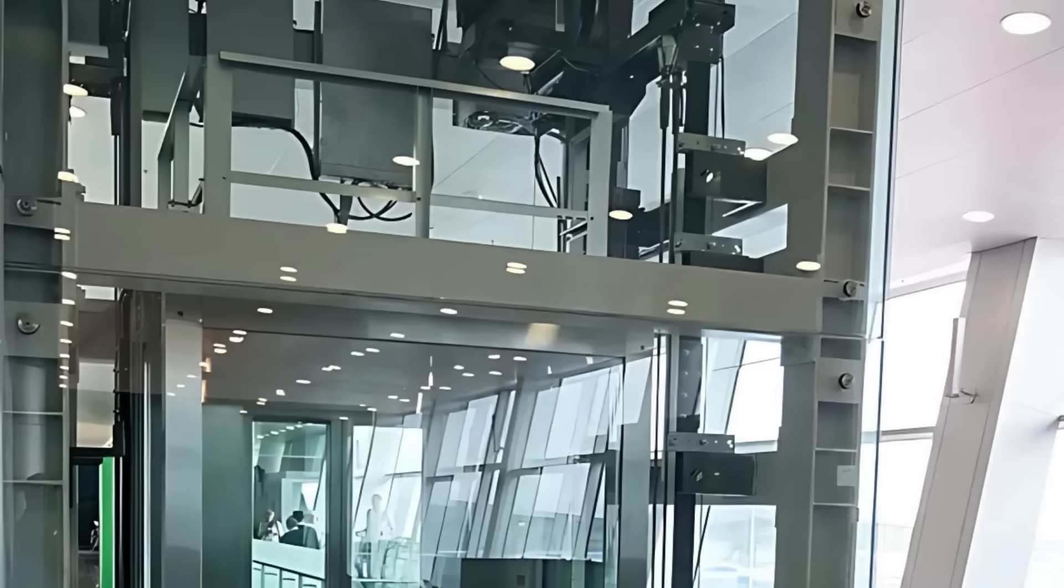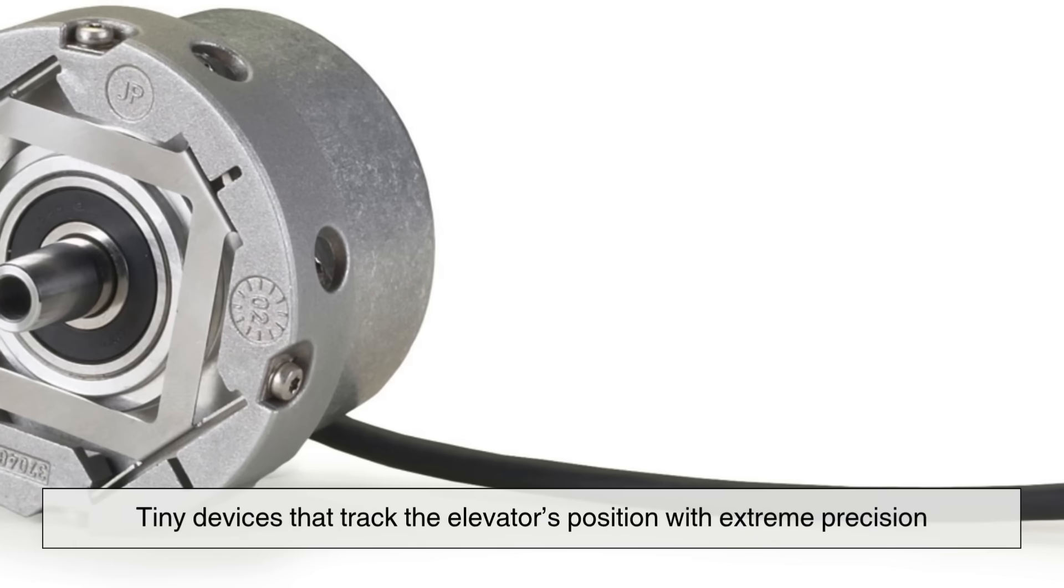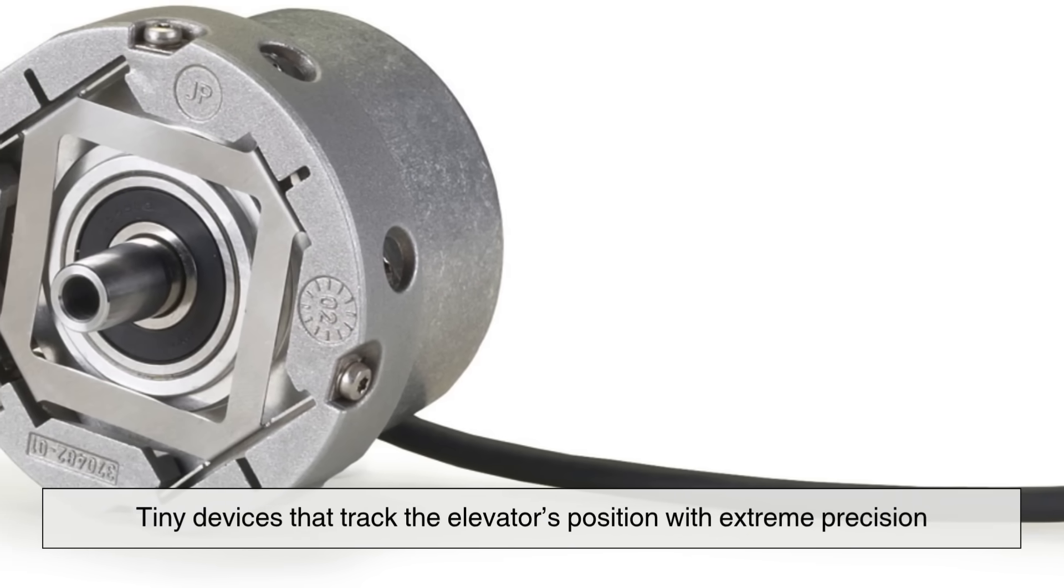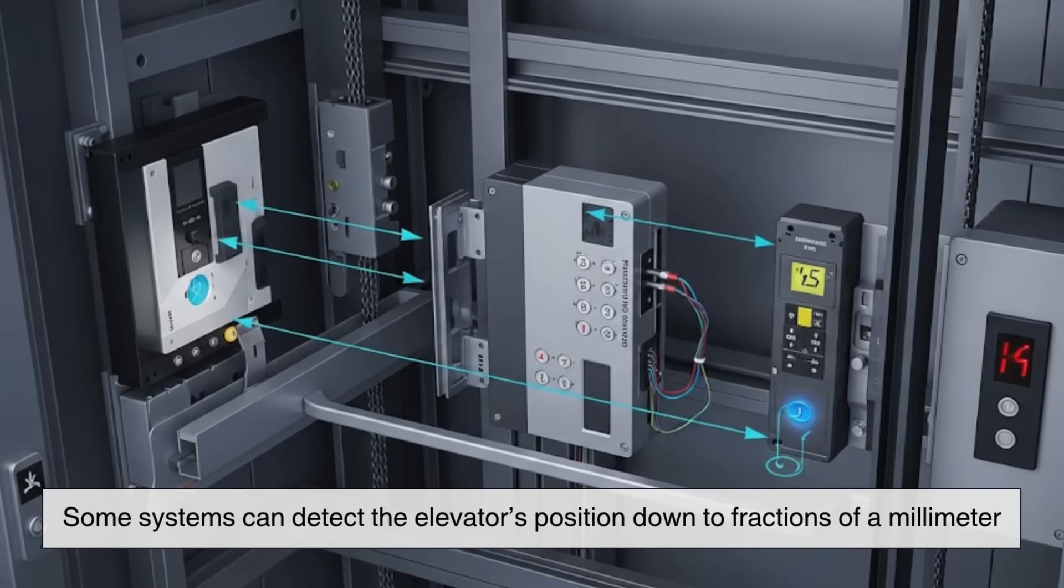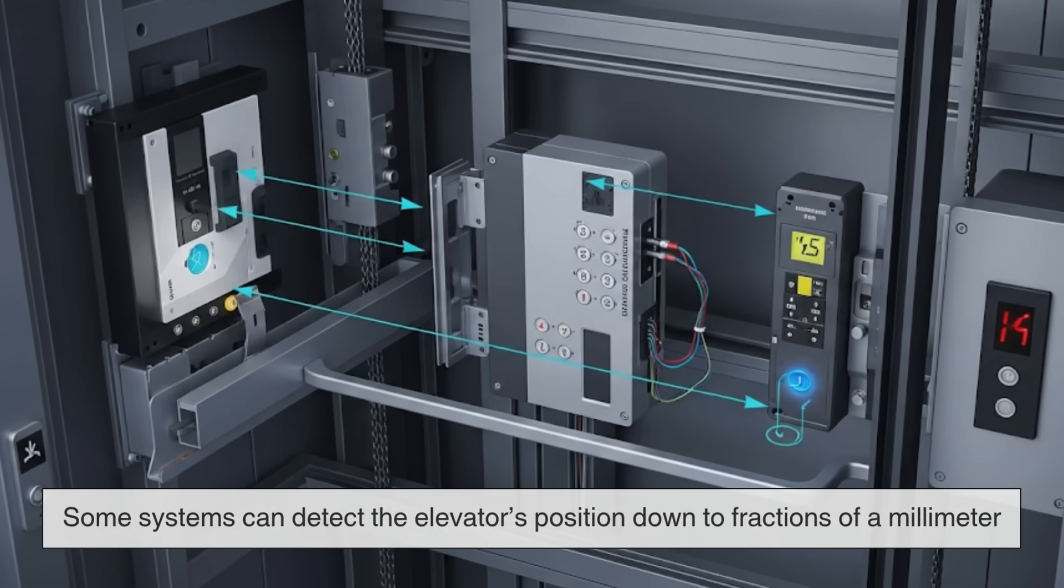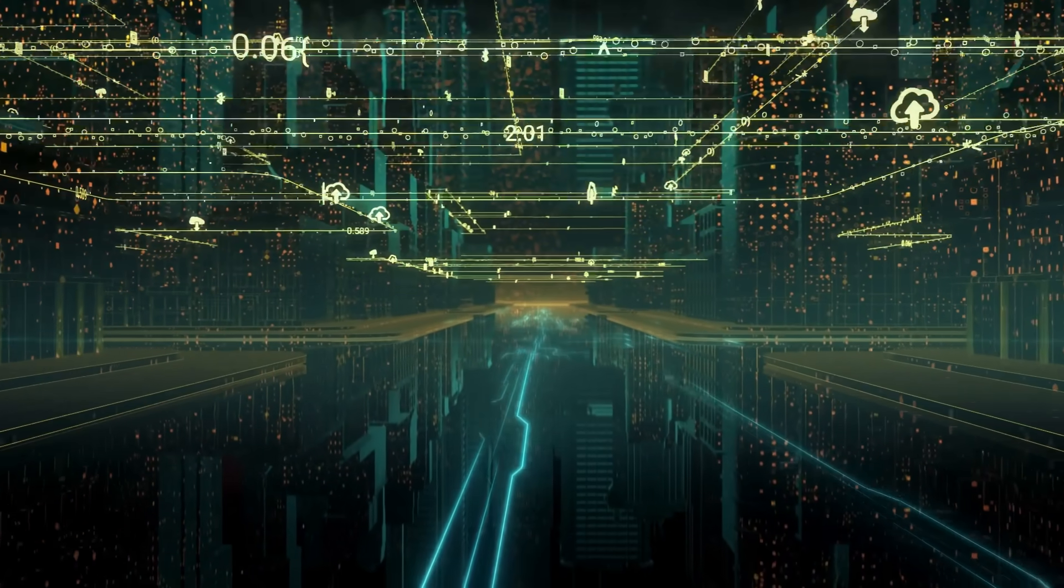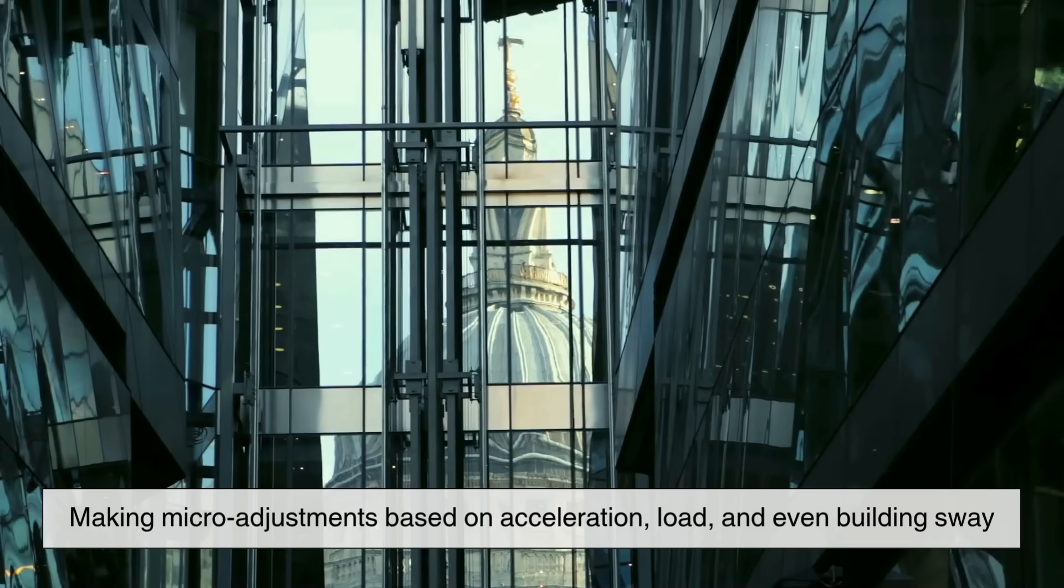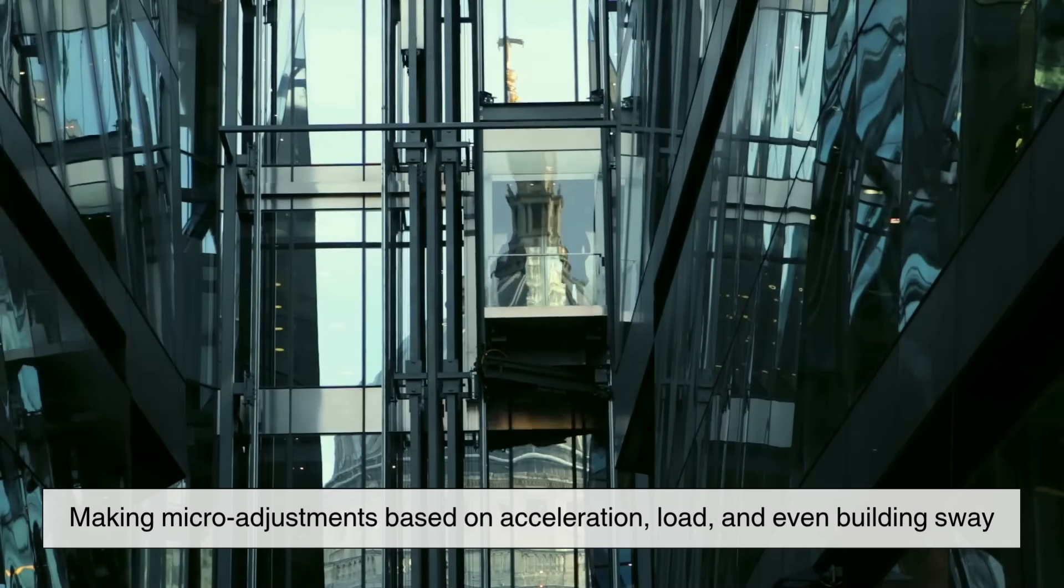To deal with that, skyscraper elevators use advanced encoders, tiny devices that track the elevator's position with extreme precision. Some systems can detect the elevator's position down to fractions of a millimeter. These elevators also use more advanced software that adapts in real time, making micro adjustments based on acceleration, load, and even building sway.